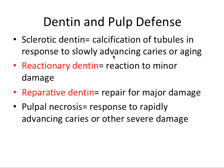Now let's talk about dentin and pulp defense — what can the pulp do to fight off or defend itself from infection? Sclerotic dentin is a very hard dentin where calcification of dentinal tubules has occurred in response to slowly advancing caries, or just aging — the physiological process of this dentin getting harder over time. Sclerotic dentin would be a pulpal response to slowly advancing caries.